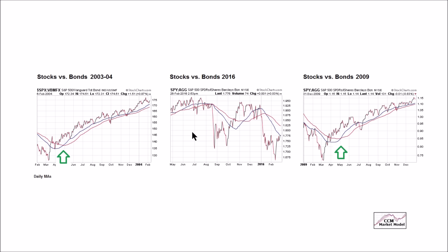Now we're looking at the exact same risk-on versus risk-off ratio relative to roughly 3 p.m. on Friday, February 26th. Right now this really doesn't look like a bullish turn. Price is below both moving averages, blue is below red, and the slopes of both are down — that looks more like the bearish side of the equation than the bullish side.